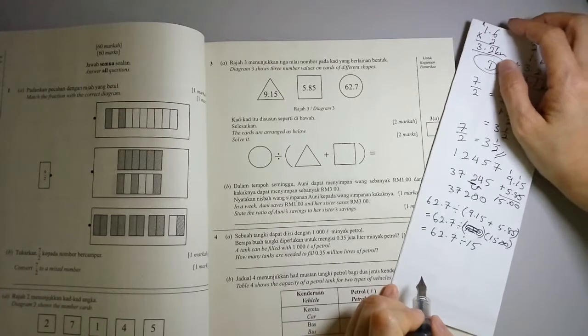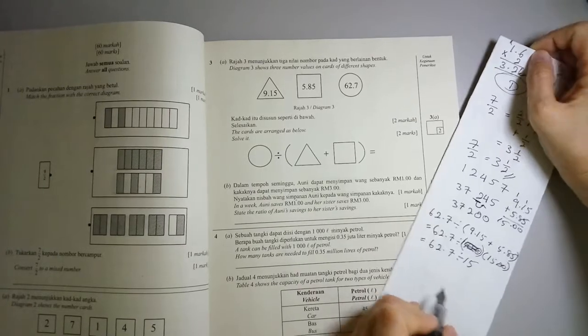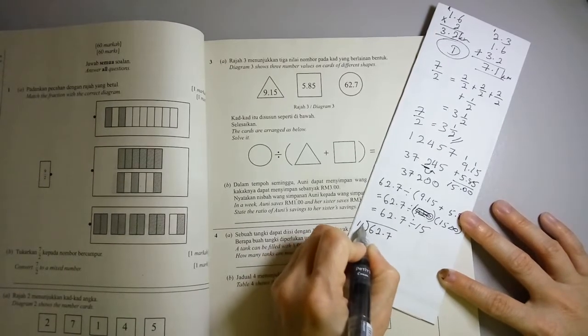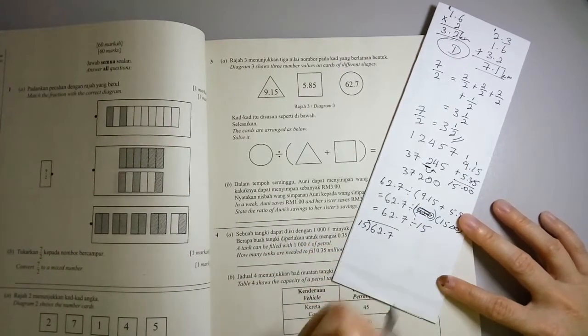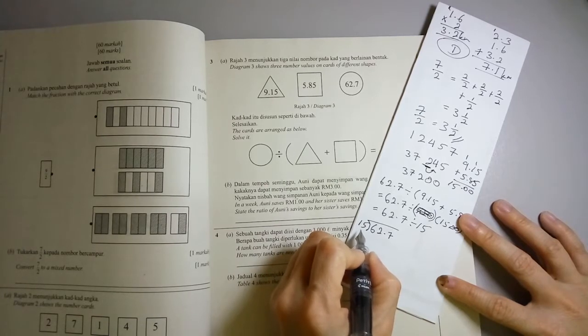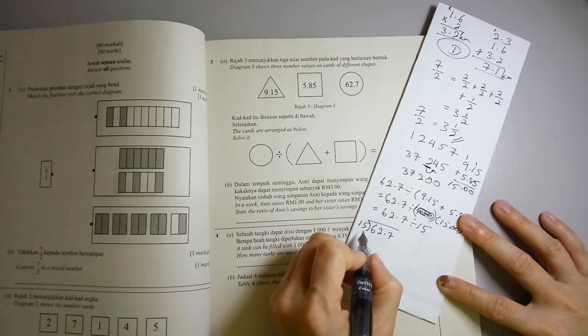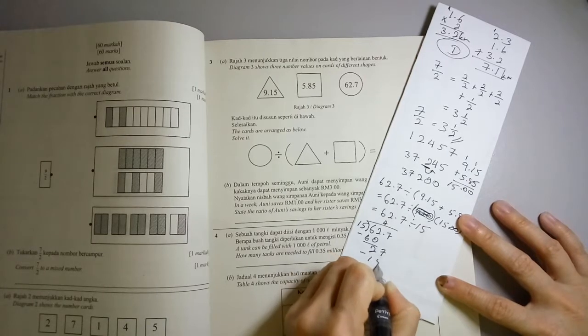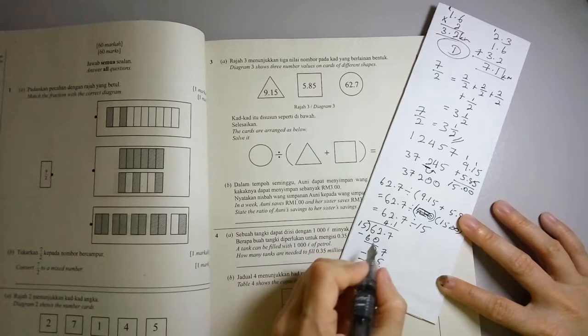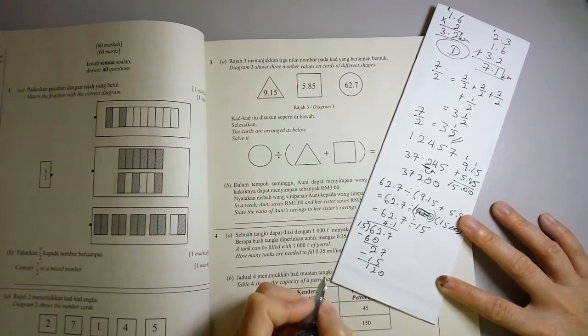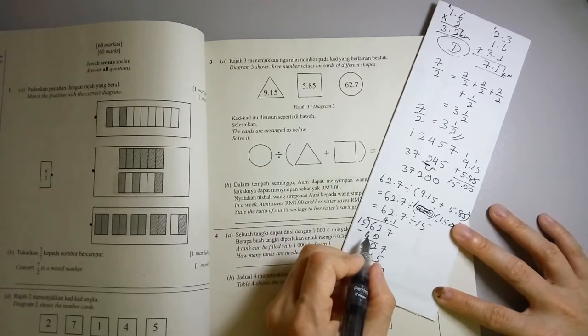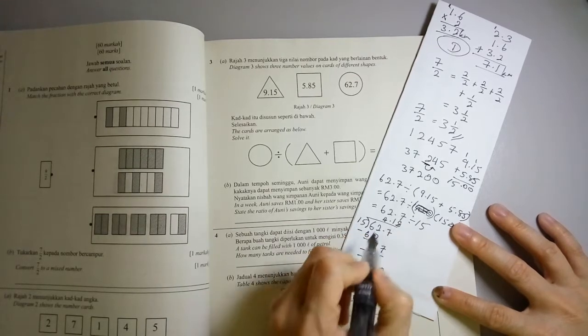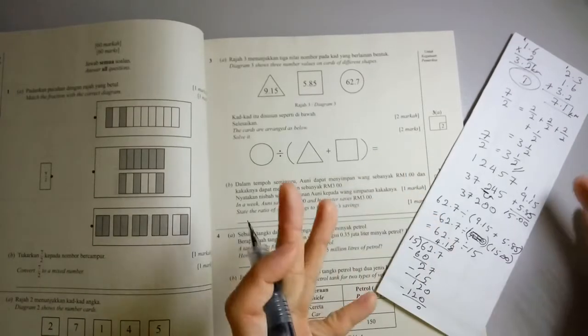So how do you do this? Now you have to solve this. So 62.7 divided by 15. There are two ways to do it. Let's try this method first. And then I'll show you another method. So 15, 15 times 2 is 30. So that means 15 times 4 would be 60. And now we have 27 minus 15 again. It's 1. Remember your decimal point. So 120 divided by 15. Now 60 is 15 times 4. So 15 times 8 would be 120. So the answer is 4.18. Write down your answer here. And you get your 2 marks.